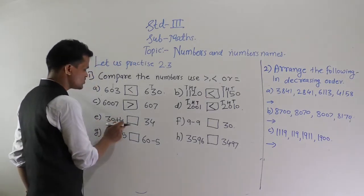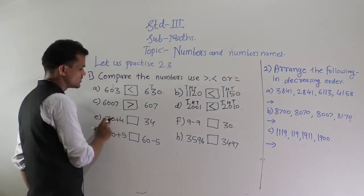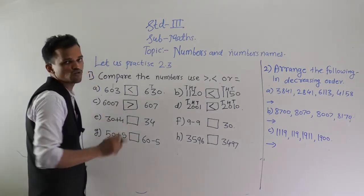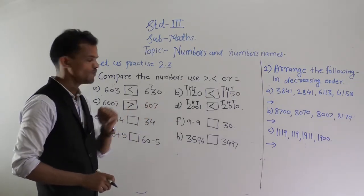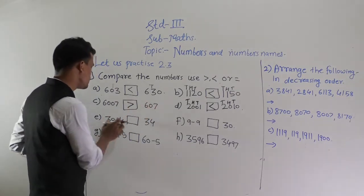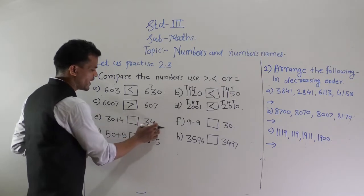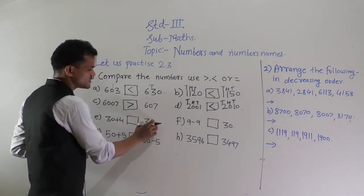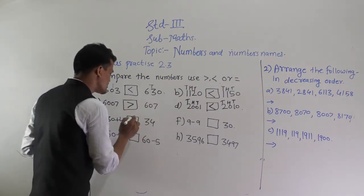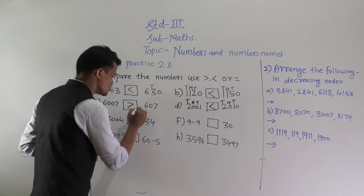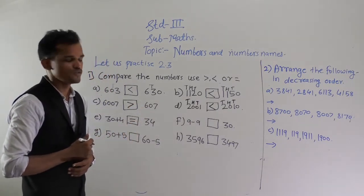Next, compare 30 + 4 and 34. So 30 + 4: count 4 fingers after 30 — 31, 32, 33, 34. So 30 + 4 equals 34, and the other side is also 34. Both numbers are the same, so use the equal to sign.